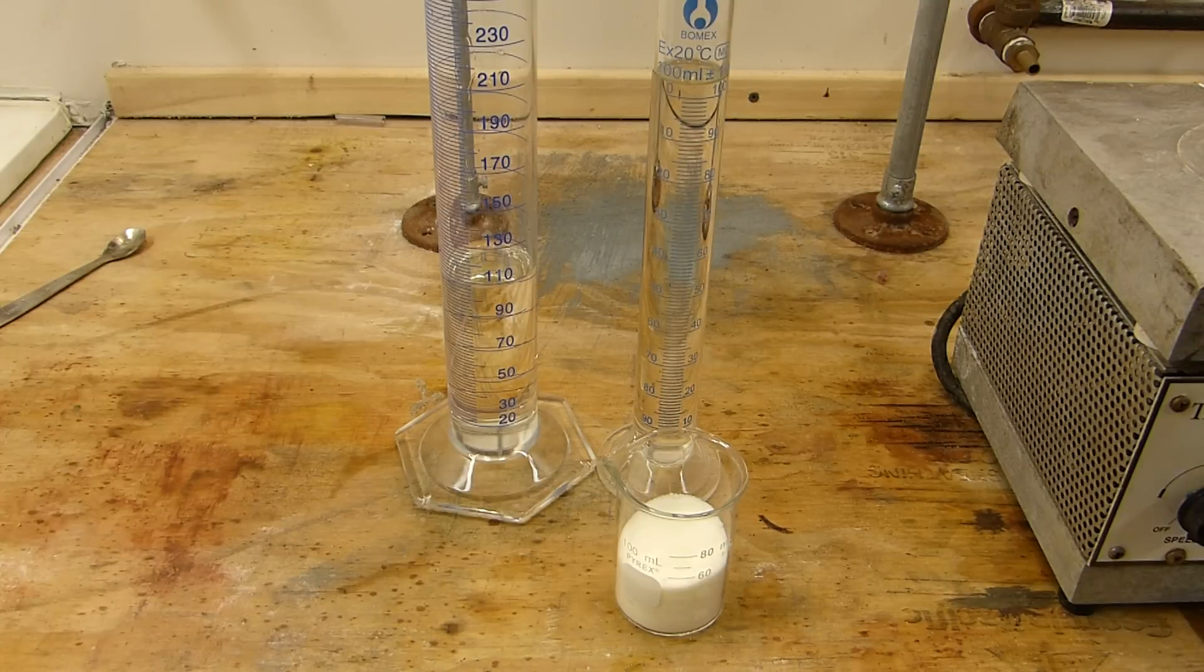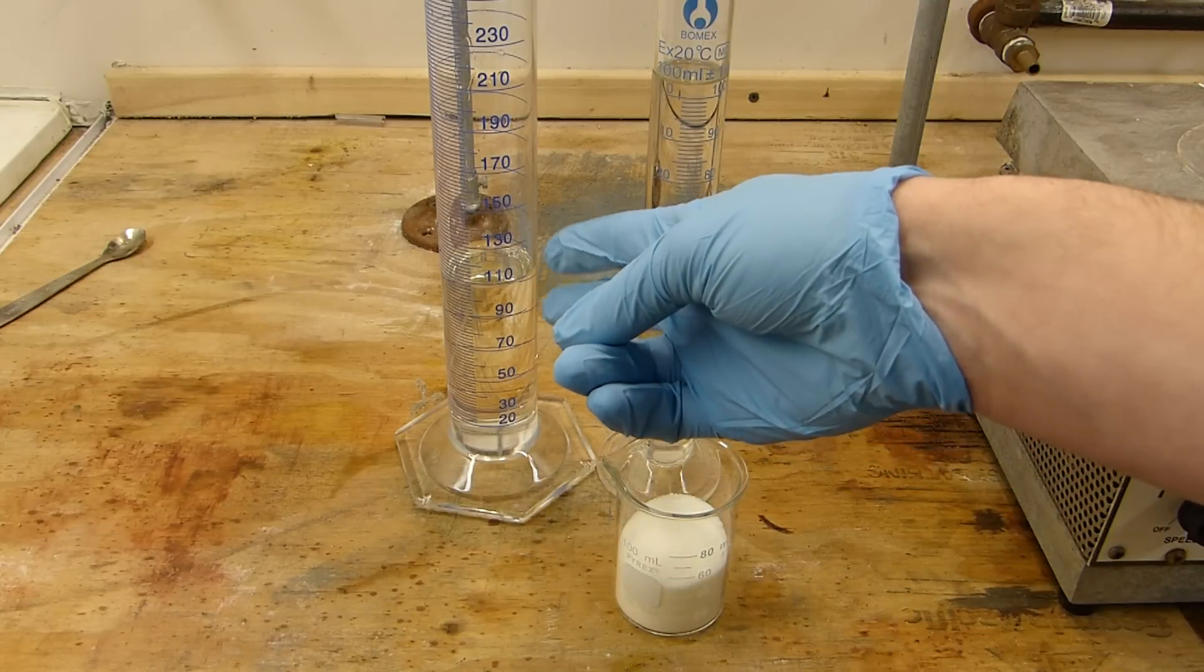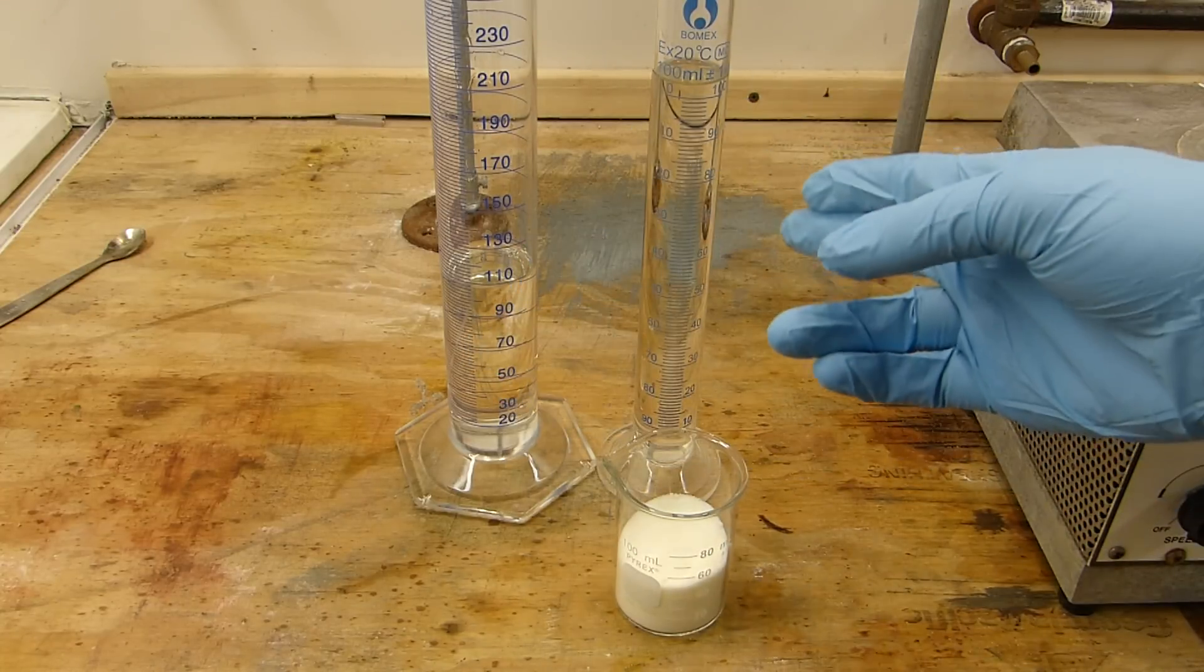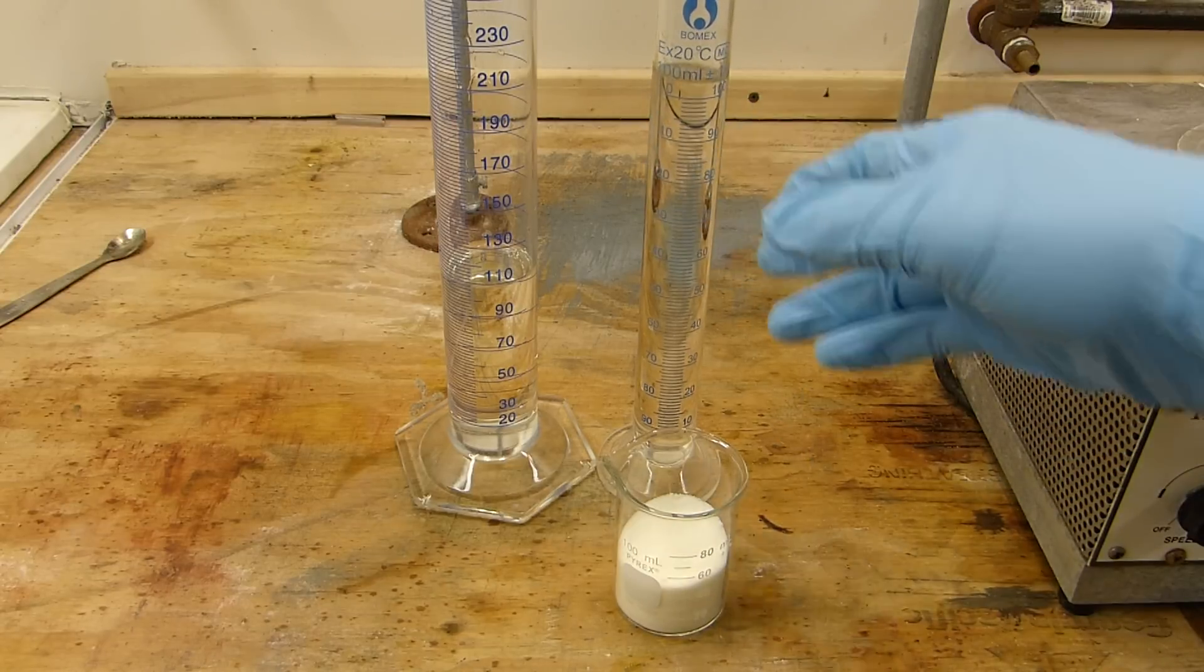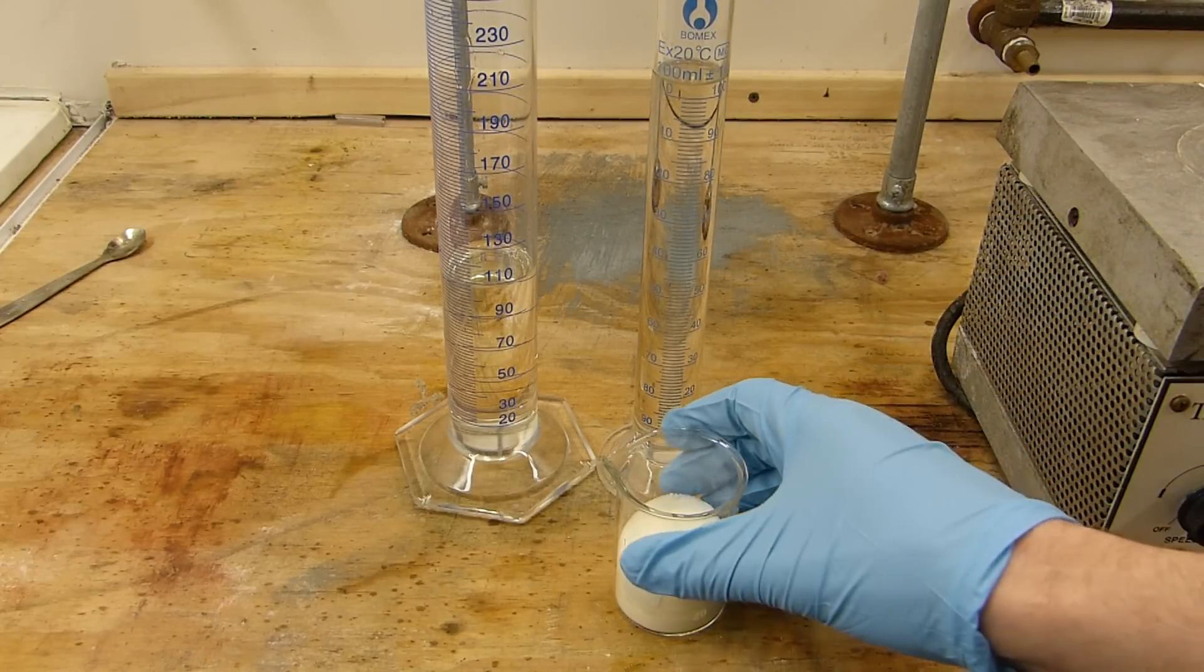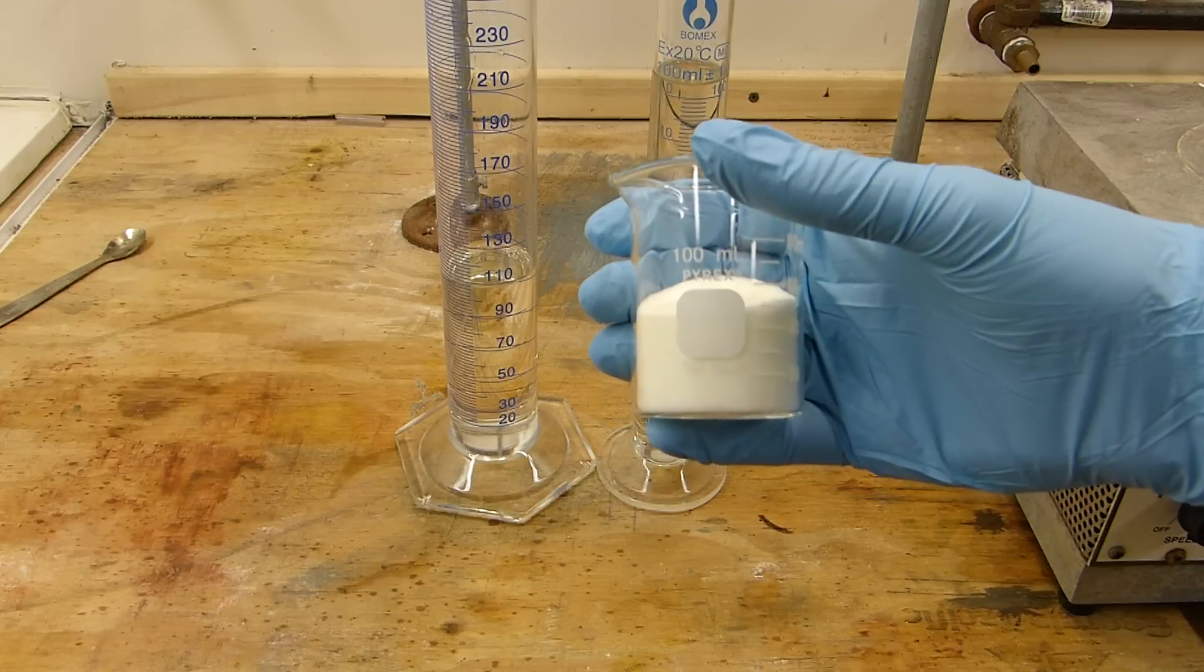Here are the prepared reactants including 121 grams of 30% hydrochloric acid, 86 grams of 70% isopropyl alcohol, and 69 grams of technical grade sodium nitrite.